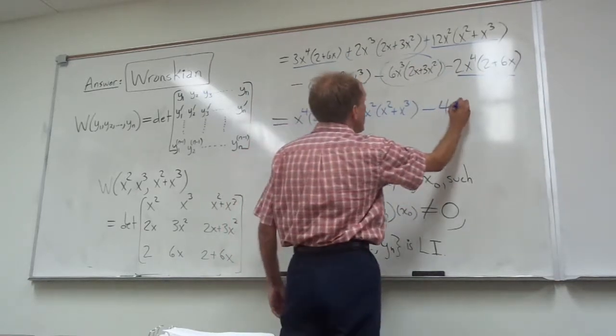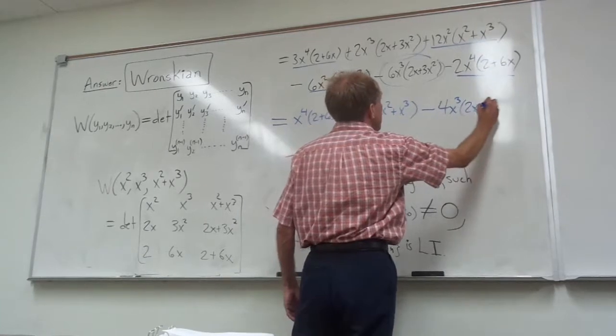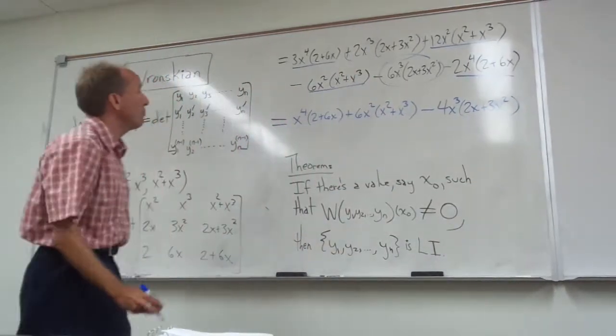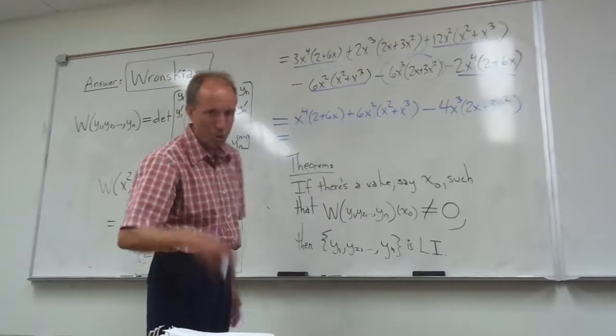minus 4x cubed times 2x plus 3x squared. So I'm hoping that if we multiply this all out, it all cancels.